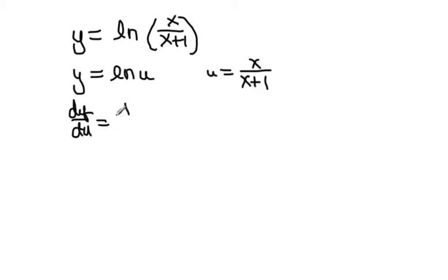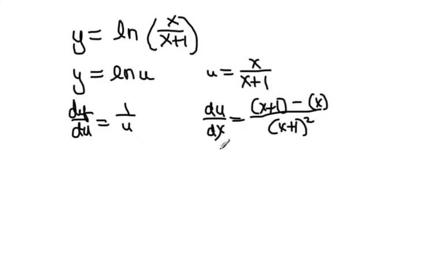And then I'm going to say that dy du, I know that's going to be 1 over u, and I know du dx is going to give me x plus 1 on the denominator squared, and then I've got x plus 1 times the derivative of x, which is 1, minus x times the derivative of x plus 1 is 1. So that's going to give me x and x are going to subtract, so I'm going to get 1 over x plus 1, all quantity squared.